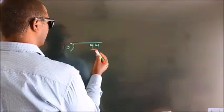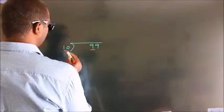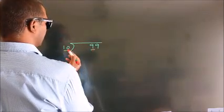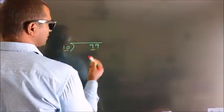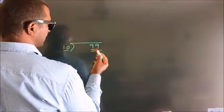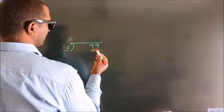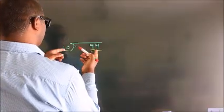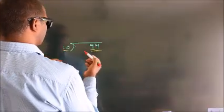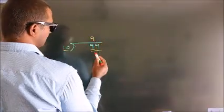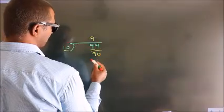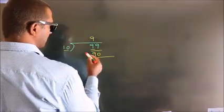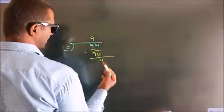Here we have 9, here 10. 9 is smaller than 10. So we should take two numbers: 99. A number close to 99 in the 10 times table is 10 nines, which is 90. Now we subtract and we get 9.